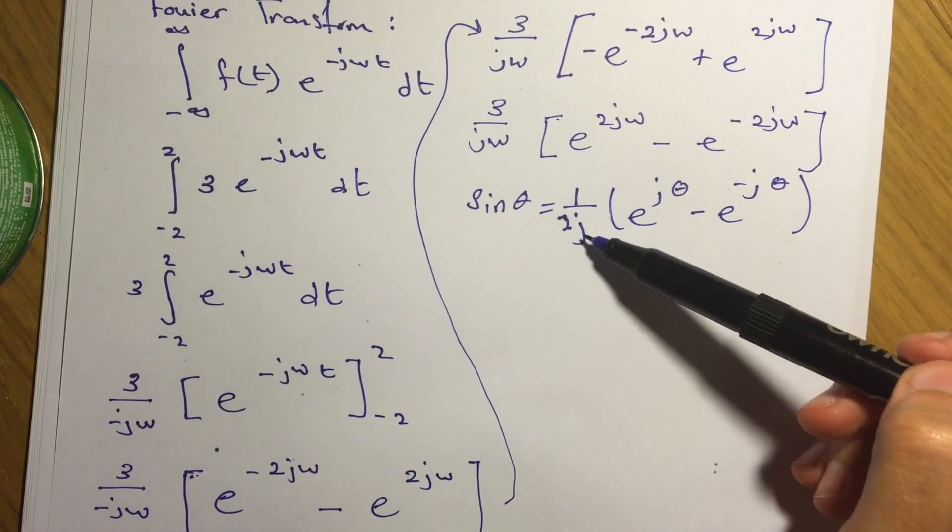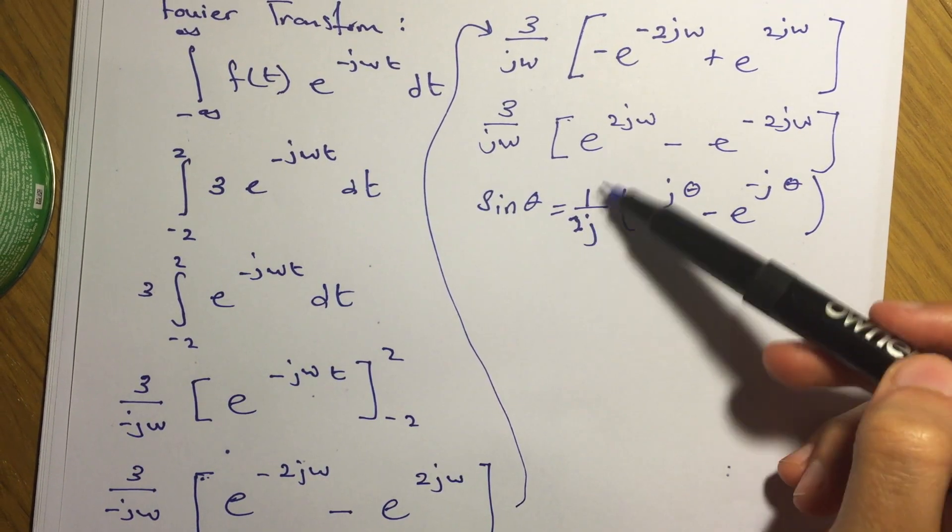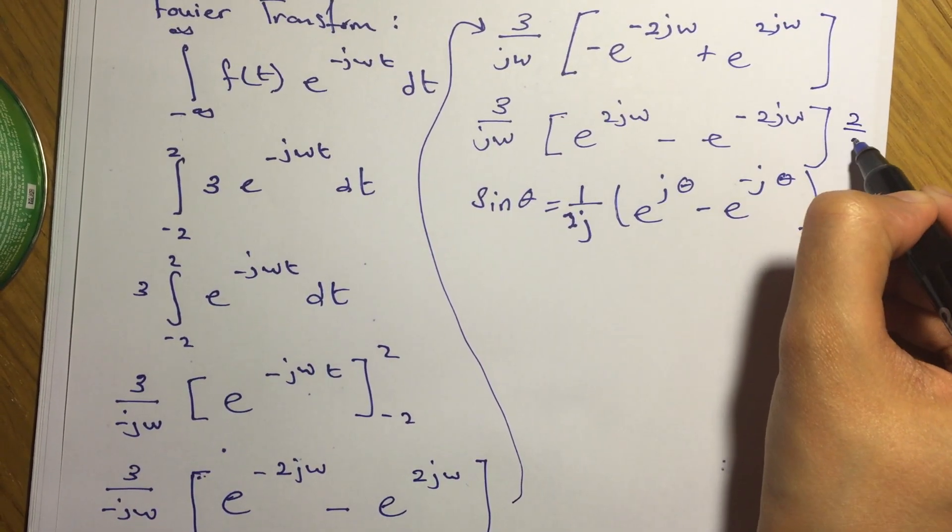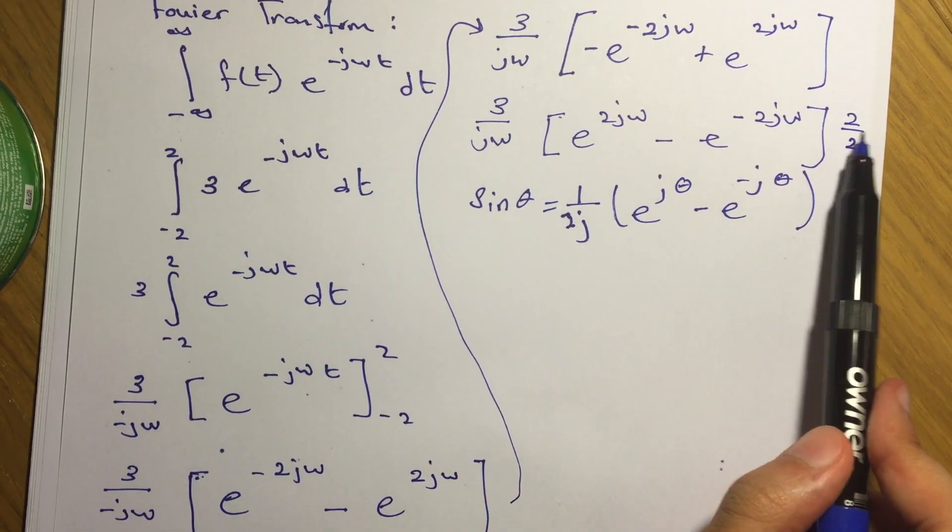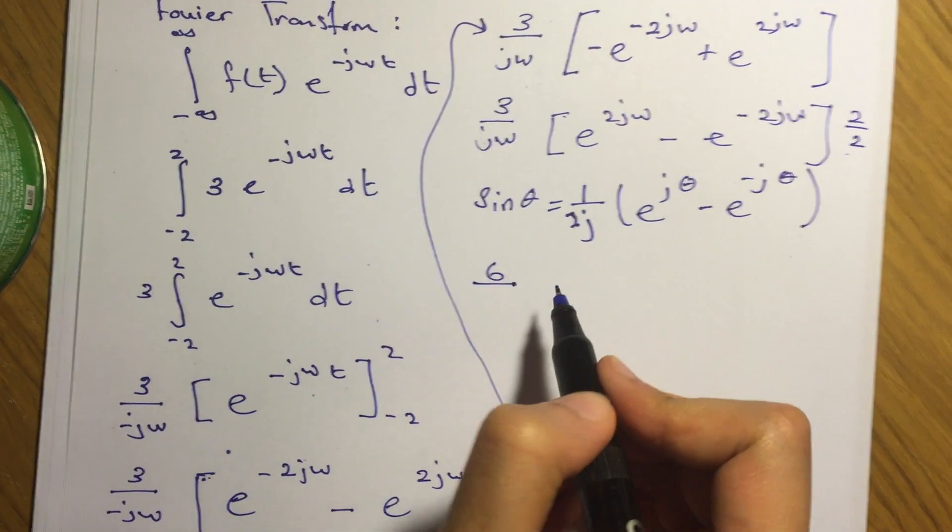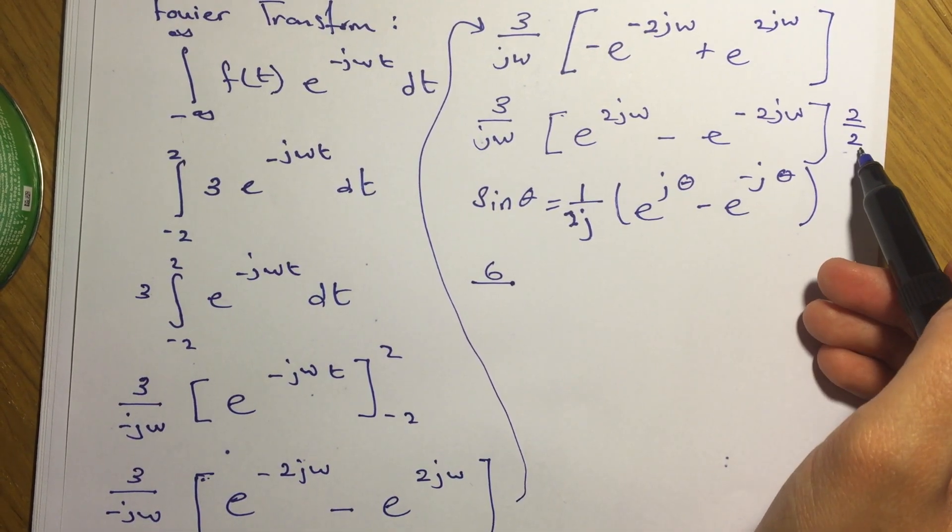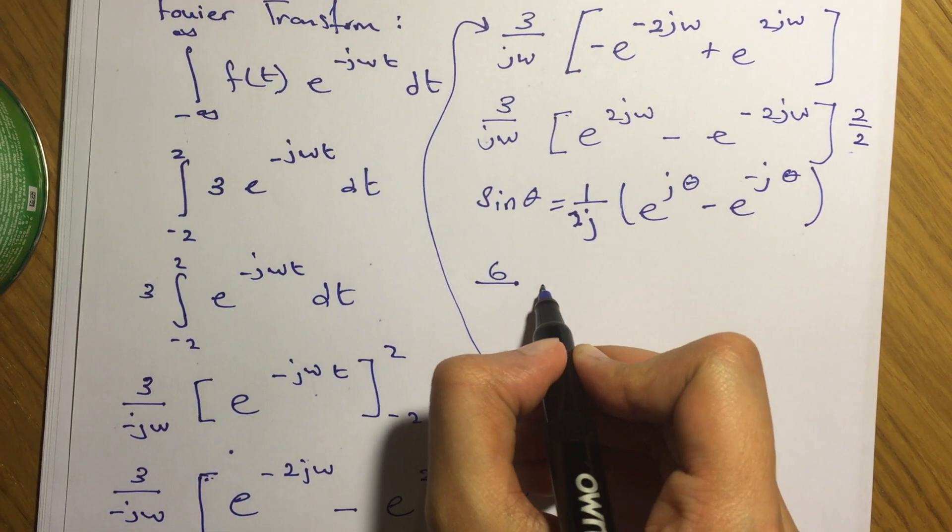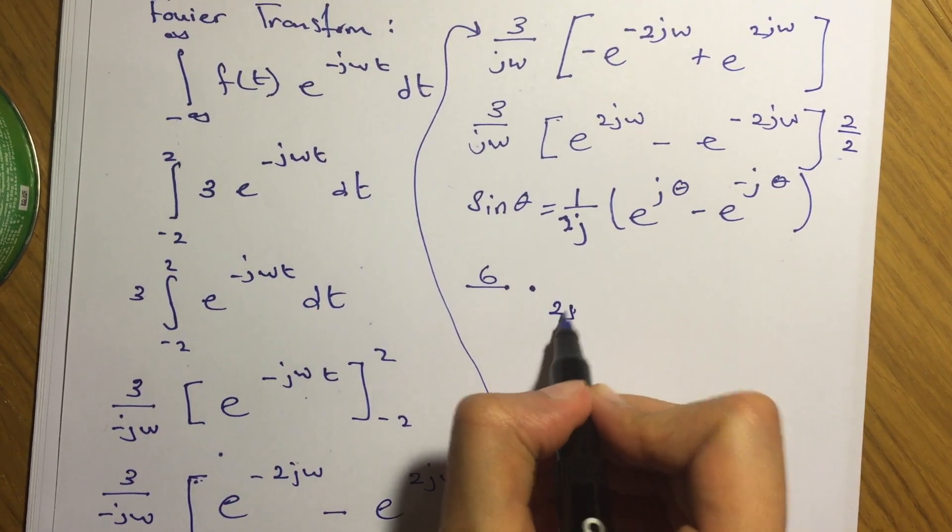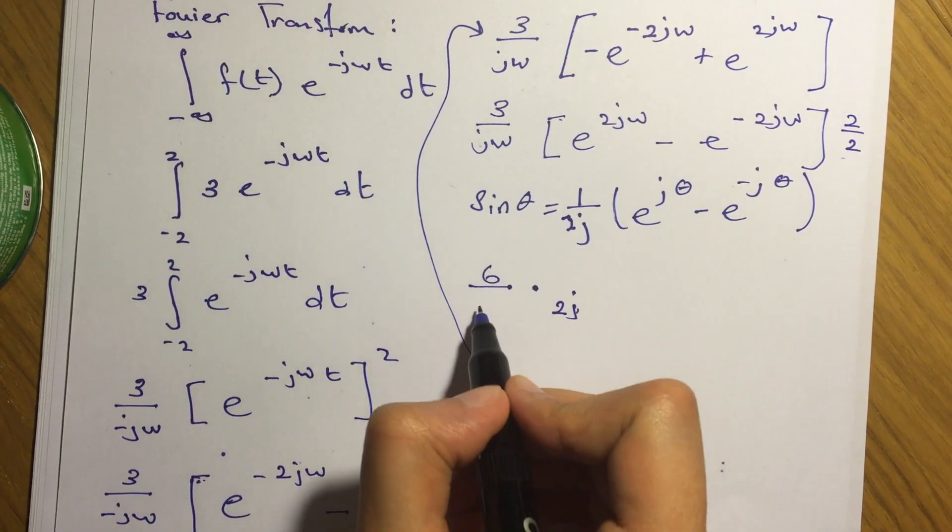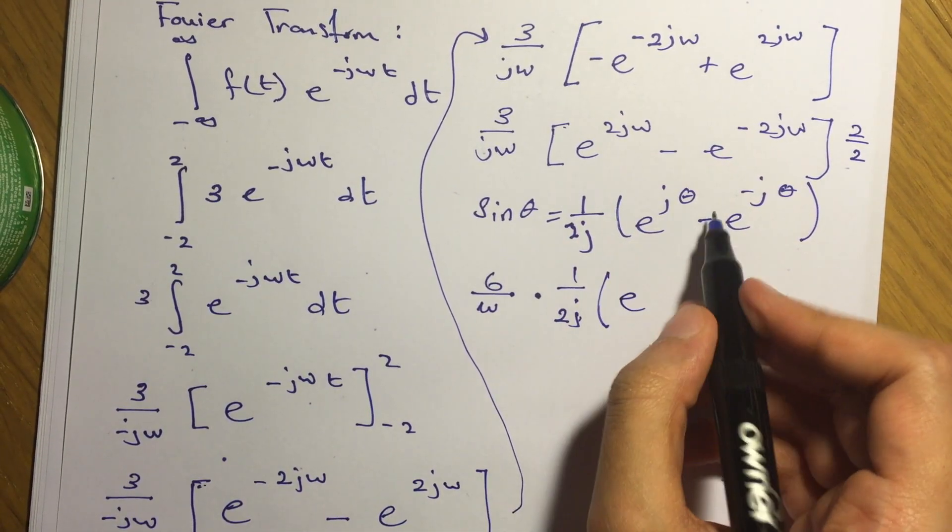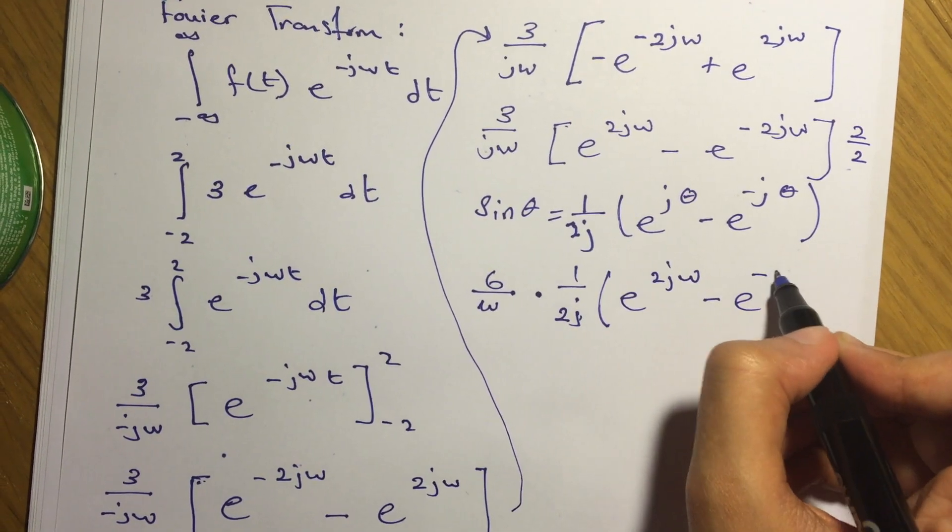We just have the half missing, so we can multiply this by 2 over 2. If I multiply the 2 in the numerator with the 3, it will give us 6. And then we have the 2 in the denominator, we'll take it separately. So we have a 2, and we take the j from here, add it to this, and we have the omega here, over e to the 2j omega minus e to the negative 2j omega.